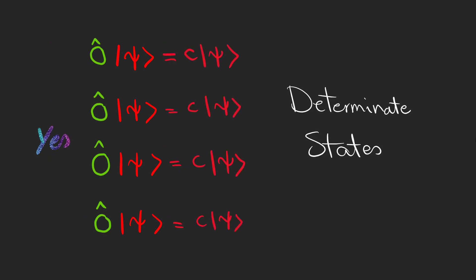The answer is yes, and these states are called determinate states. If we measure the observable on these states, they always yield the same result.